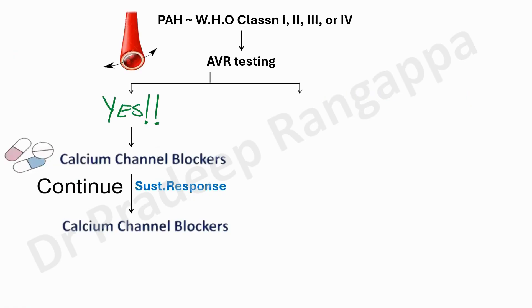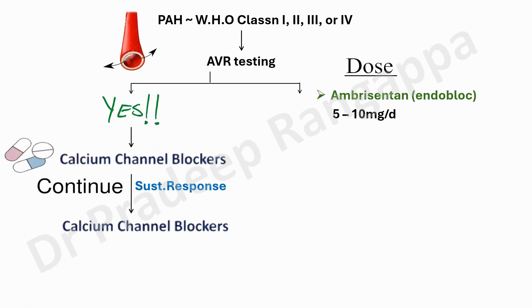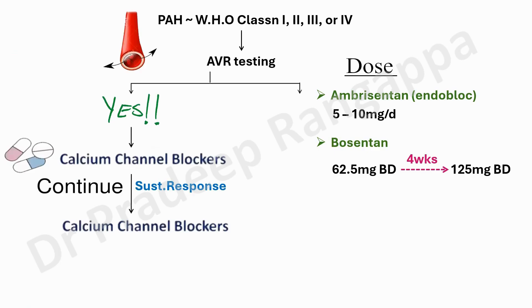Regarding dosages: ambrisentan, available as Endoblock, is a simple dose of 5 to 10 mg once a day, starting at 5 mg, which can be increased over the next 3 to 4 weeks to 10 mg per day if tolerated. Bosentan is used at 62.5 mg twice a day to start; after 4 weeks, if tolerated, it can be increased to 125 mg twice a day. Phosphodiesterase inhibitors: the suggestion is to use tadalafil rather than sildenafil, starting at 20 mg once a day, increased after 4 weeks to 40 mg. Always as a single dose, not BD.